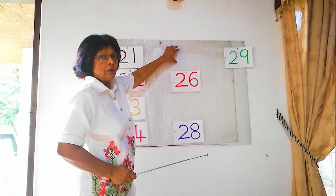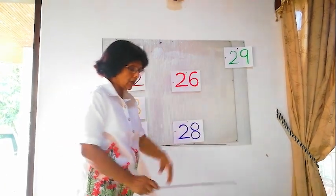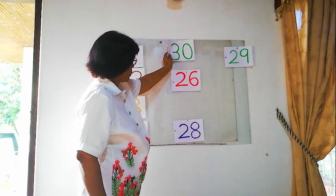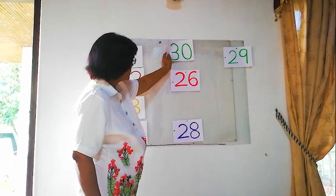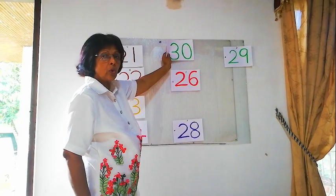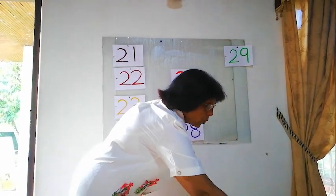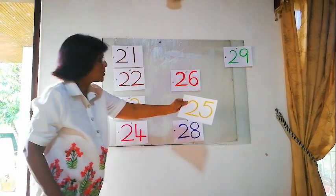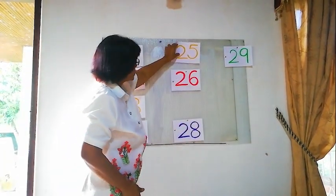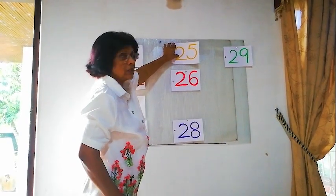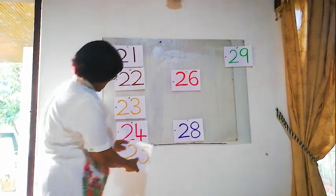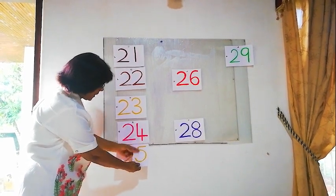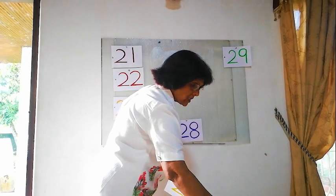25. 25 must come here. We will find 25. Is this 25? No, this is not 25 — this is 30. How do you write 25? 2 and 5. Is this 25? Yes, this is 25. Here, after 24 comes 25. Right? We will fix this here.